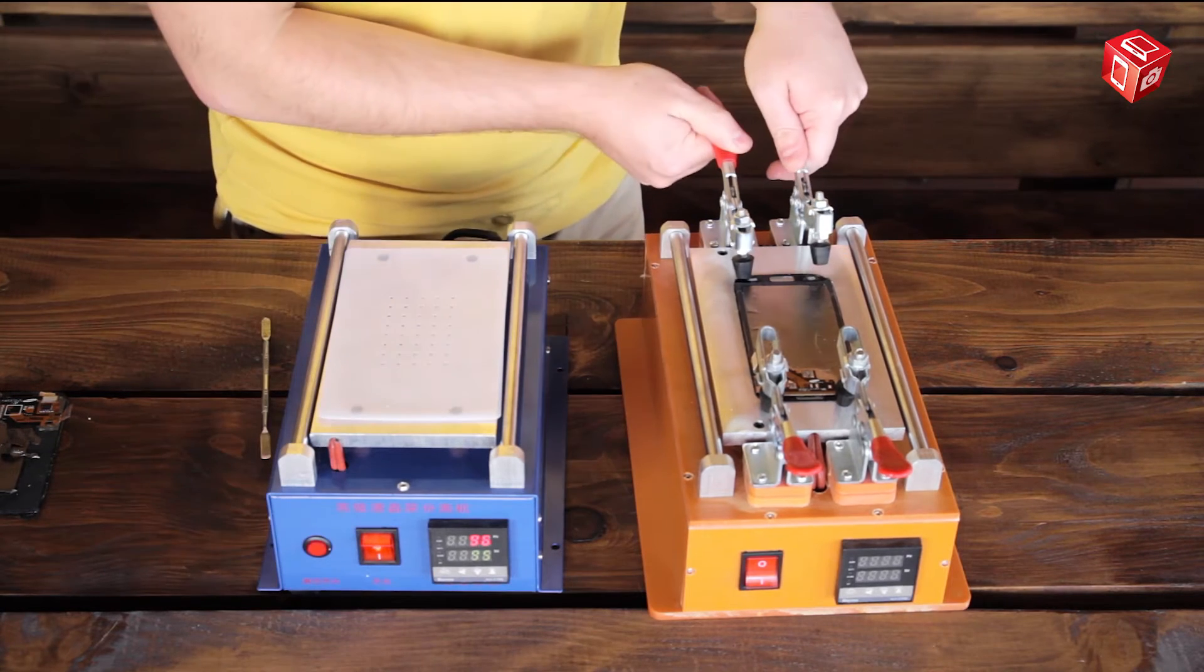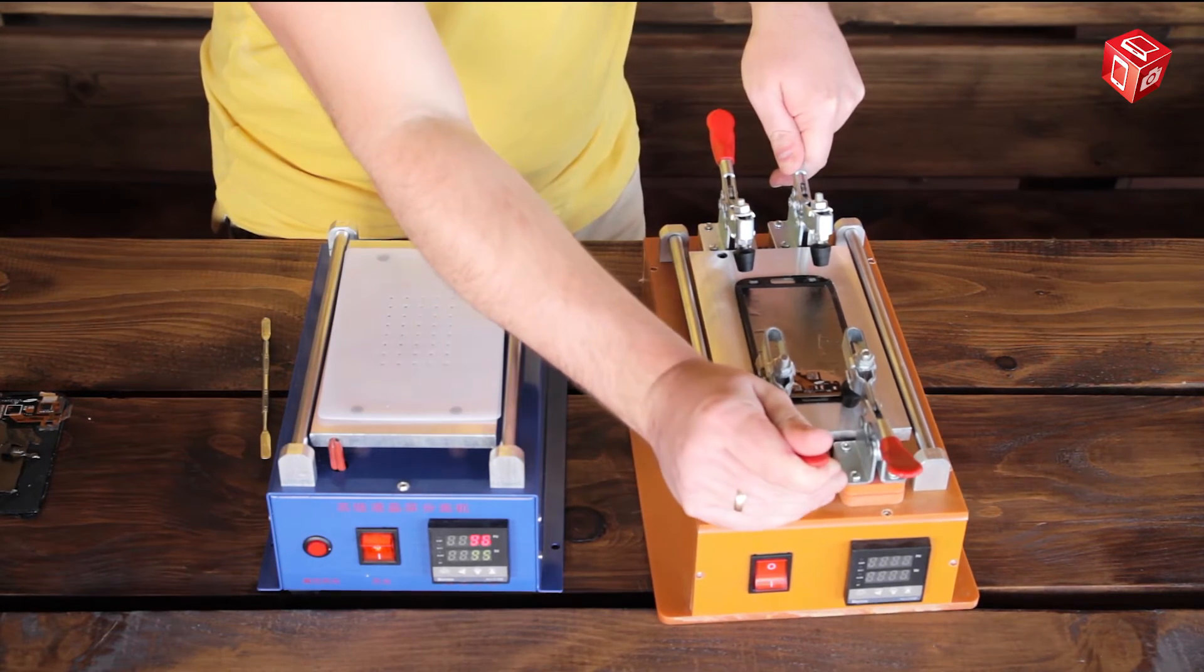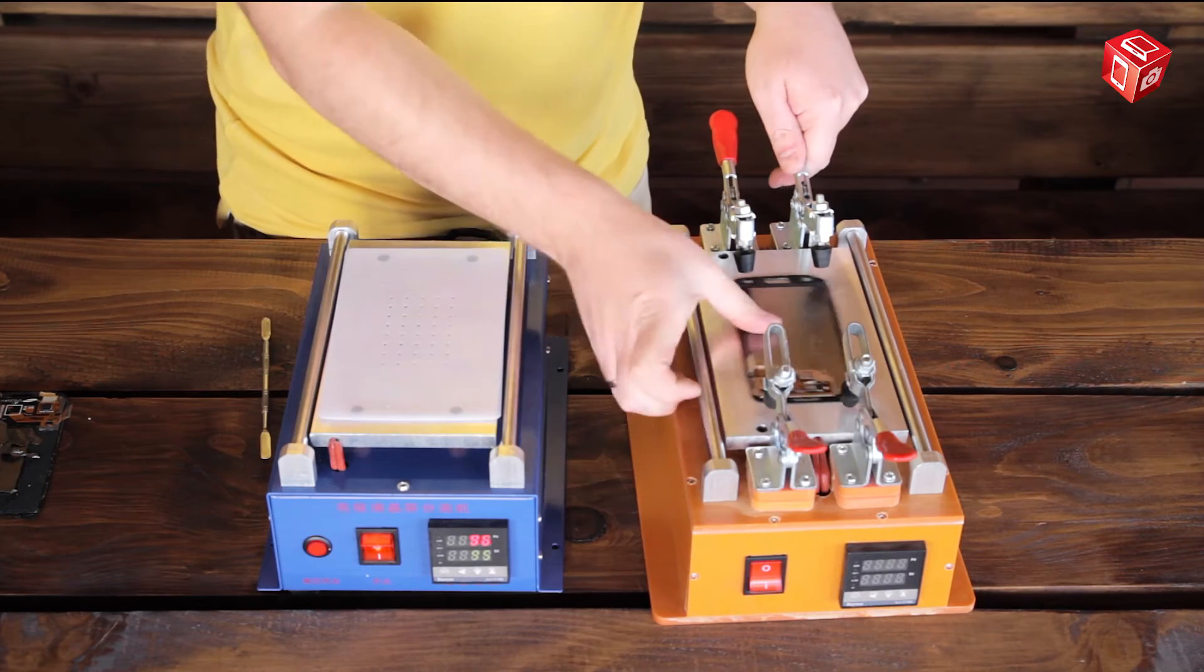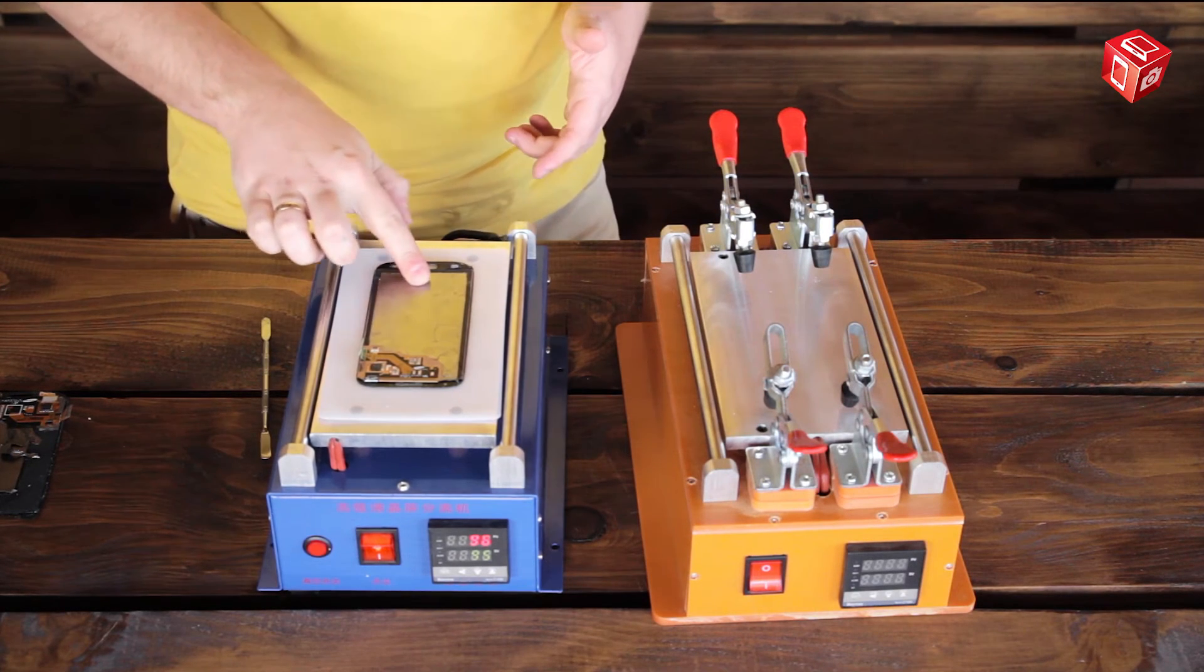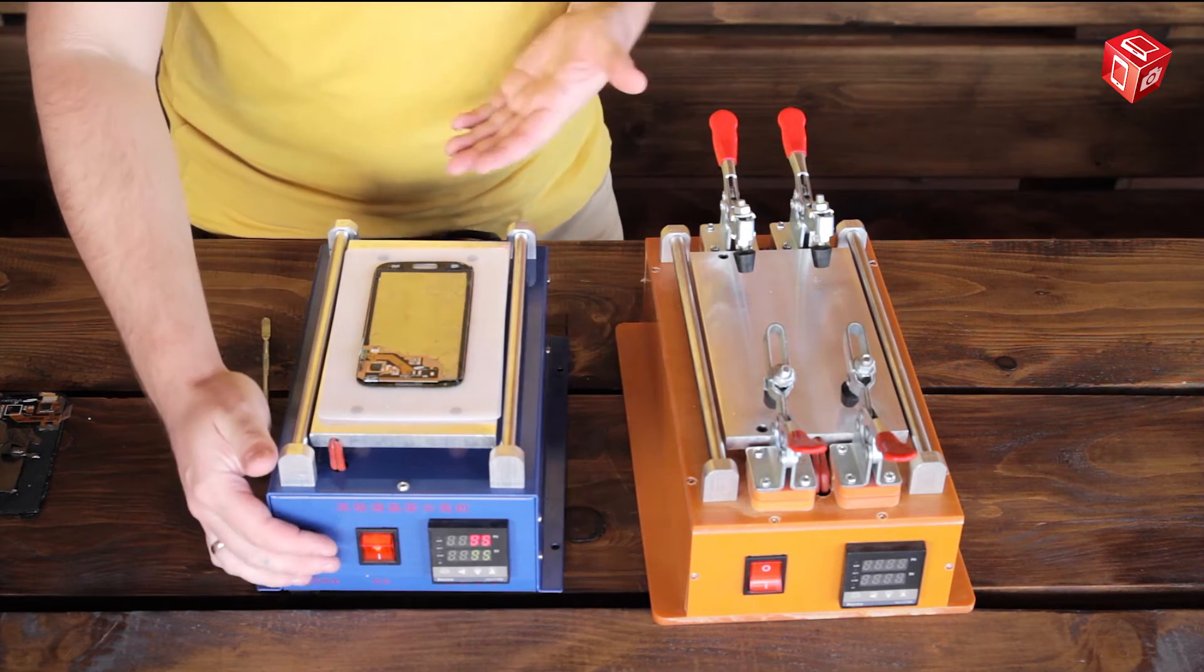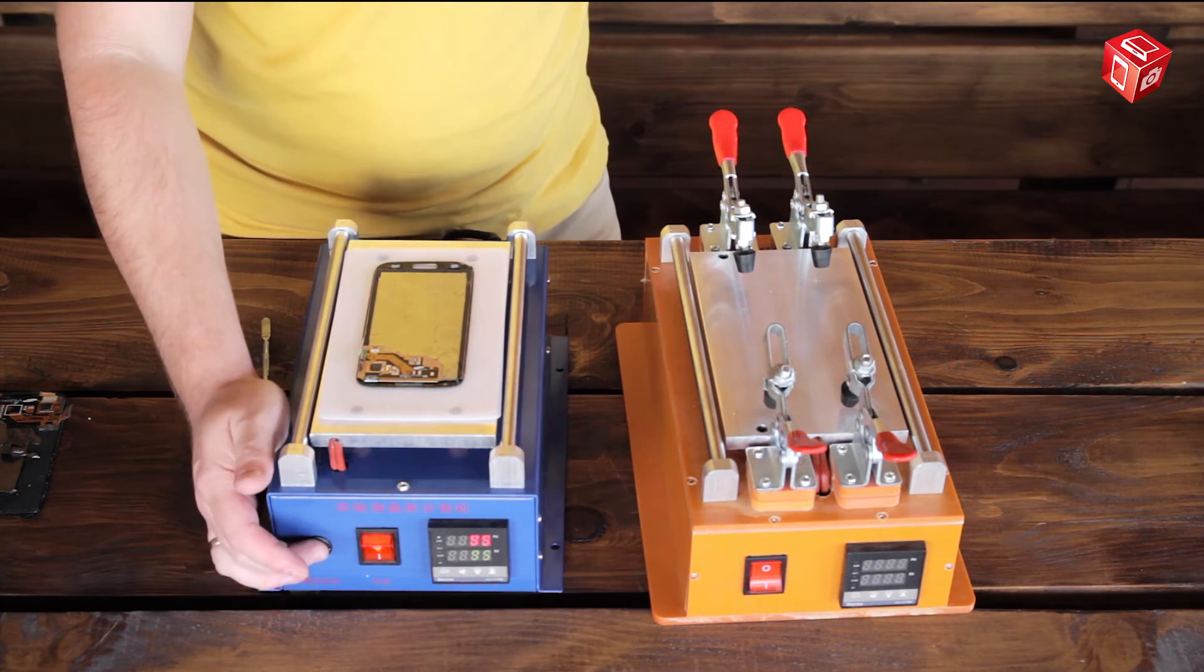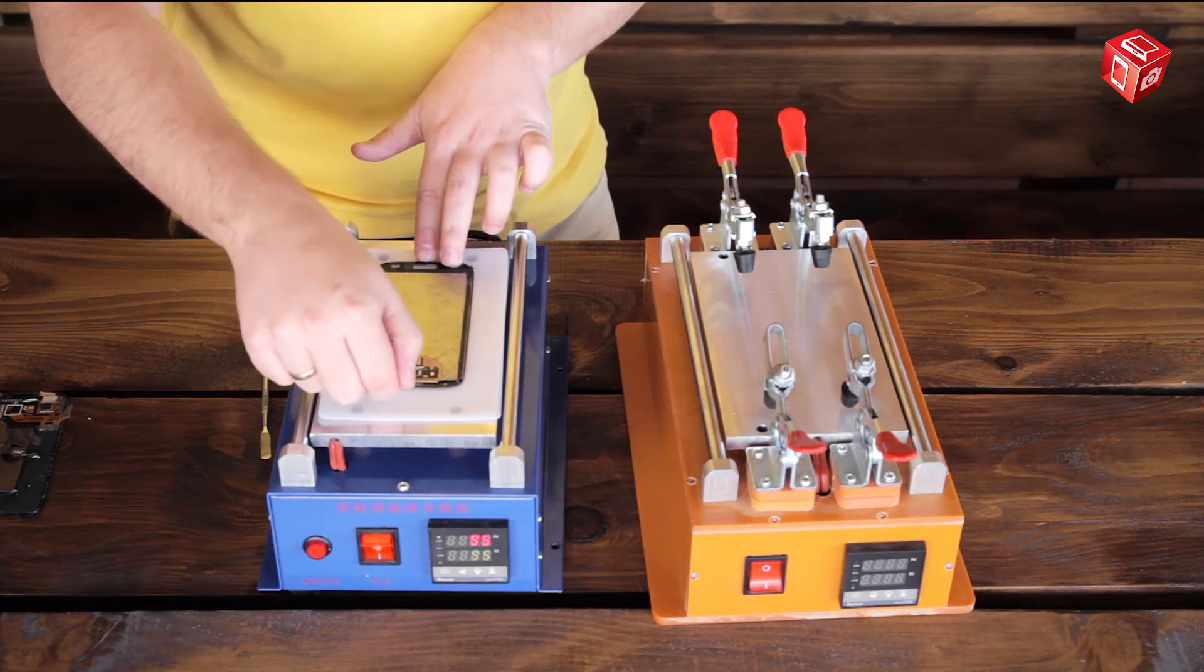This display can be fixed without any problems on top of the TBK988 model as well. Vacuum fixes the module very well and it is possible to easily remove the glass. However, what can be done if glass edges were damaged or completely broken off?